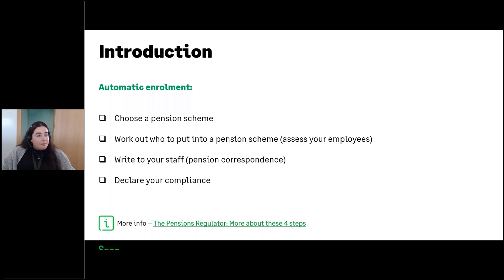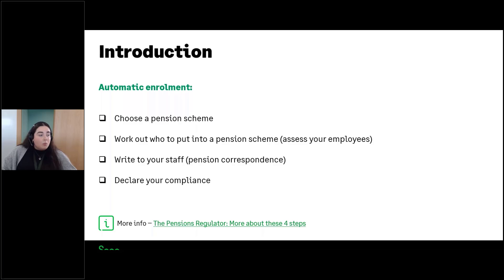The next step is working out who to put into the pension scheme — assessing your employees. You'll need to assess the employee's age and wage to determine their worker category or worker type, and whether or not they're going to be eligible for automatic enrollment.